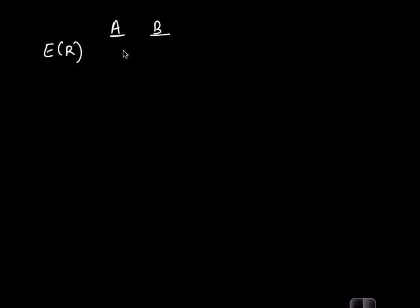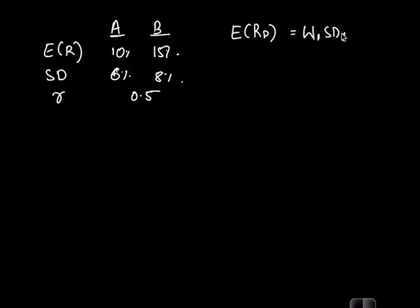So the way it works is we have, let's say, two assets: asset A and asset B. We have expected return of these two assets, let's say 10% and 15%. We have standard deviation of these two assets, let's say 6% and 8%. And then we have a correlation coefficient, let's say the correlation coefficient is 0.5. Now when you want to calculate expected return of the portfolio, that is calculated as weight one into the return of first security plus weight two into return of second security, or simply weighted average.